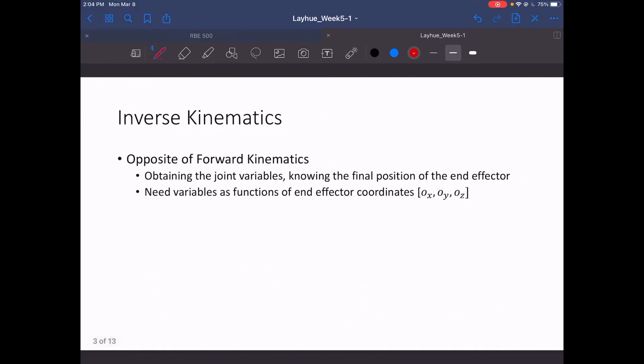So with inverse kinematics, as the name entails, it's the opposite of forward kinematics. We are obtaining the joint variables—this is your thetas for your revolute joints and your d for your prismatic joints. We do so by knowing the final position of the end effector.